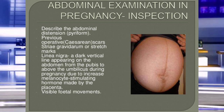In inspection, first we check abdominal size — it may be large or small according to the growth of the baby or the amount of amniotic fluid. Next, we check abdominal shape — it may be oval, cylindrical, or broad. The shape depends on the lie of the baby; if the lie is longitudinal, the shape will be oval.